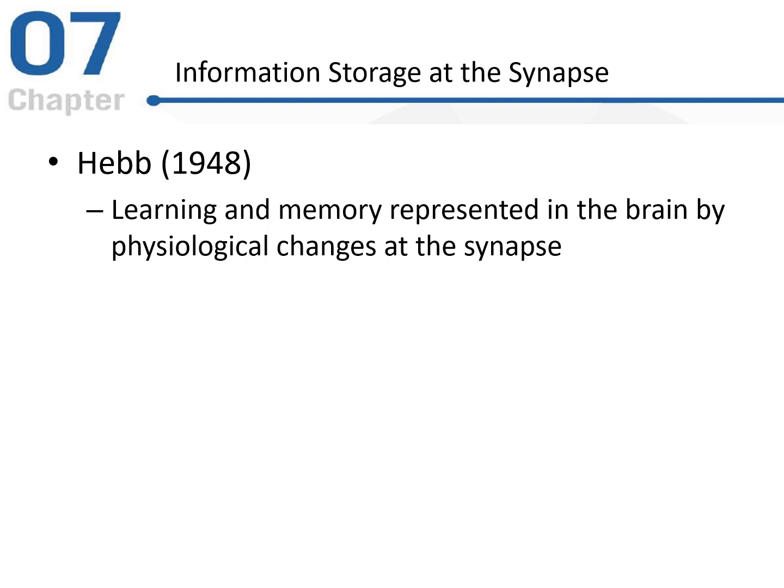Studies like this lent support to the idea, presented by Hebb in 1948, that learning and memory is represented in the brain by actual physiological changes of the synapse — meaning there are structural changes occurring at the synapse gap between neurons. Basically, your brain structure is changing when things are moved to being a more permanent state in long-term memory. We're actually seeing some sort of a physiological change in the brain, specifically at the synapse.